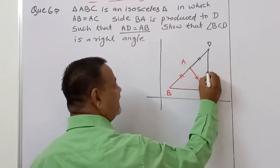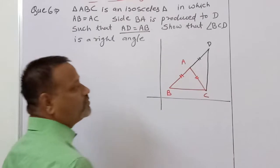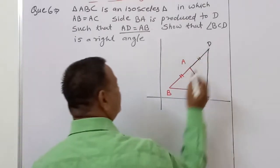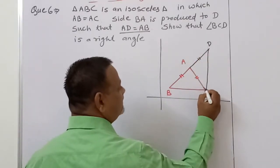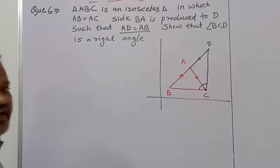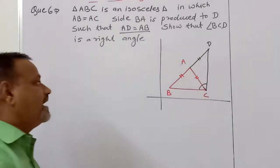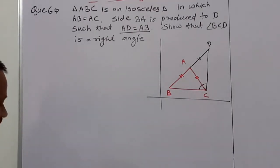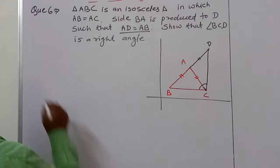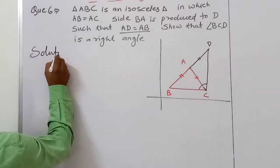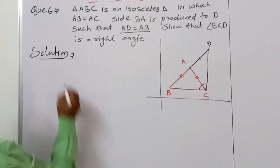We have joined D and C. We have to show that angle BCD is 90 degrees — this angle is of 90 degrees. Let us see how we show this. We have to show clearly. Solution: